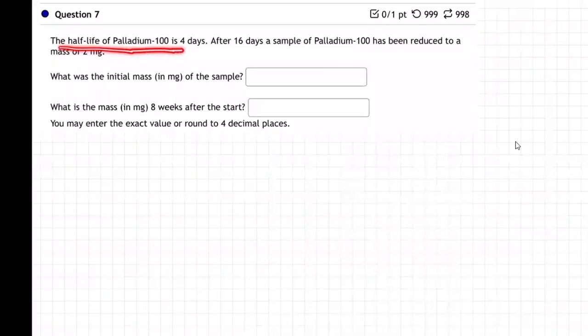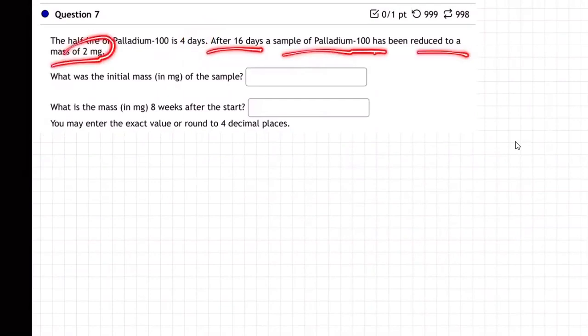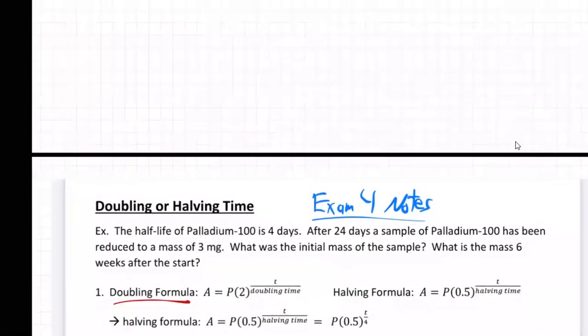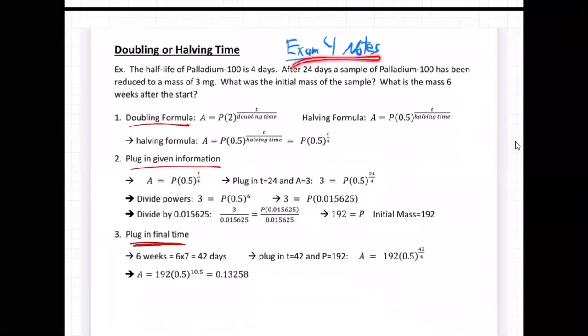The half-life of Palladium-100 is four days. So every four days half of it goes away. After 16 days a sample has been reduced to a mass of 2 milligrams. What was the initial mass and what is the mass 8 weeks after the start? If you look at the notes, here are the exam four notes on doubling or halving time.